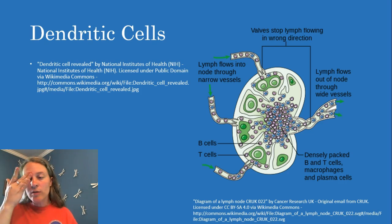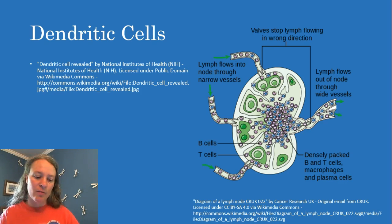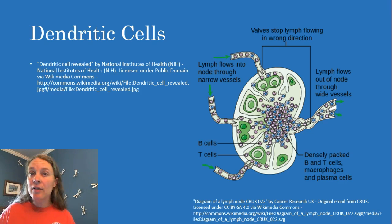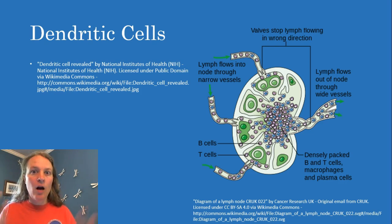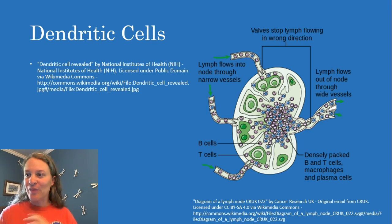Some monocytes can become dendritic cells once they enter the tissue; there are also dendritic cells derived separately. One of the key aspects of dendritic cells is that they're mobile. Once they enter the tissue and undergo phagocytosis, they can actually travel through the lymphatic vessels to the lymph nodes. There, they seek out T cells living in the lymph nodes and present the antigens to them. While macrophages can present antigens, they can only present them to lymphocytes coming to the site of inflammation — whereas dendritic cells actually take the antigens and bring them to where the concentration of T cells is highest. That's a really key distinction.